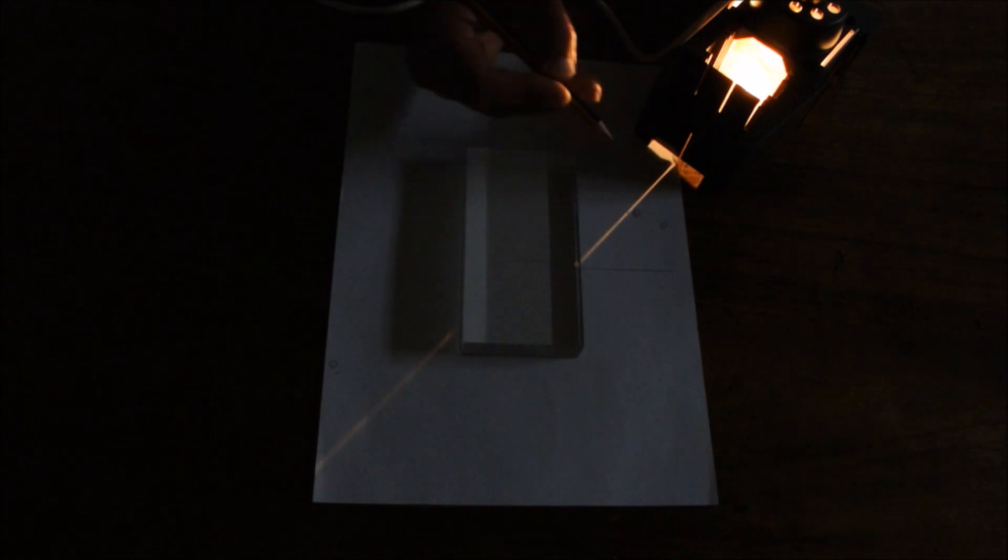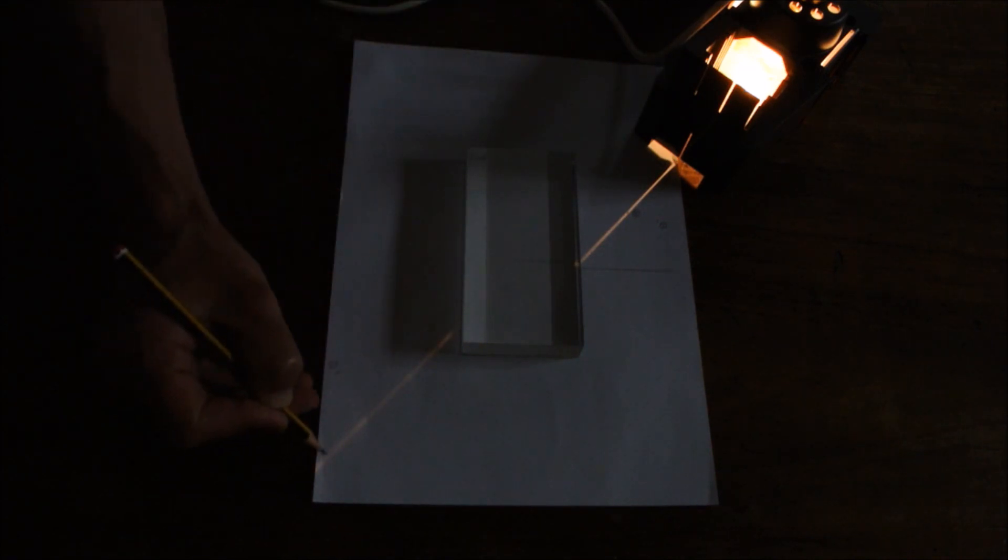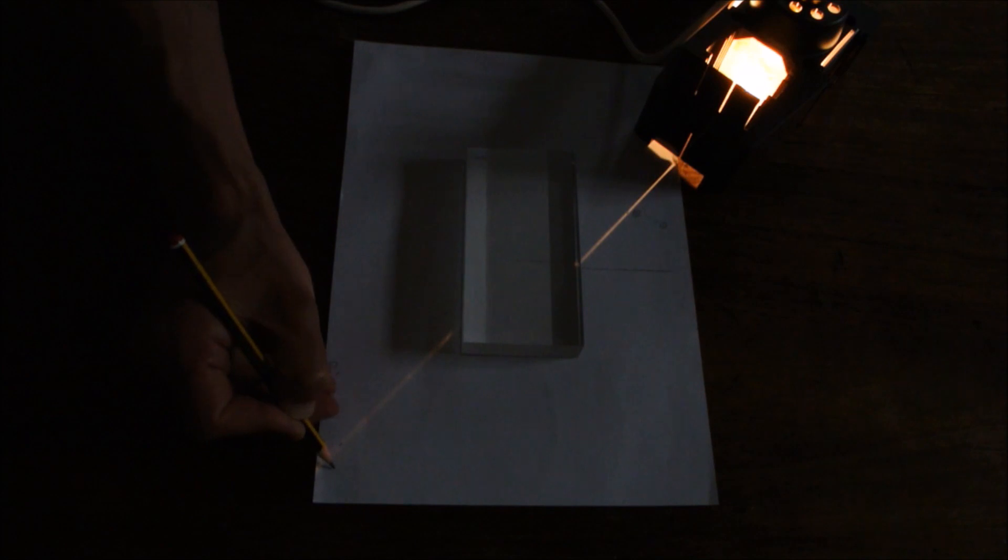Now I'm going to move the ray around to the second position, like so. Again, hitting this position on the side of the block like that. I'm going to mark it here, and label it two. And then mark the centre of the ray in two places, carefully here and here, and label that two as well.